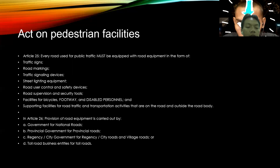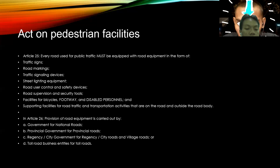In Article number 26: provision of route equipment is carried out by the central government for national routes, provincial government for provincial roads, and city or regional government for city roads and village routes.